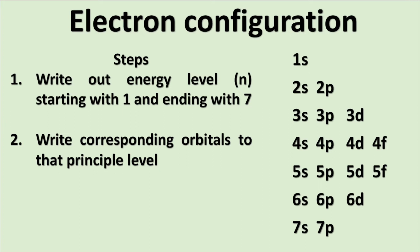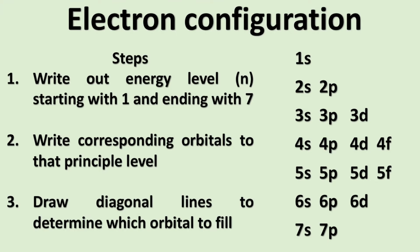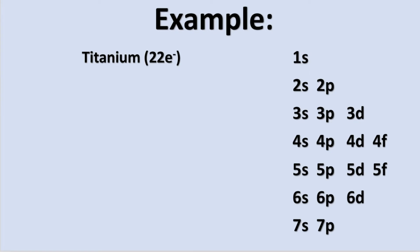So you must be wondering how this diagram is actually going to be useful. As we begin to write electron configurations, we will begin to use this diagram to help us by filling the orbitals in a diagonal fashion. What I mean by this is as we fill in the orbitals, we will draw diagonal lines to determine which orbitals to fill. Let's put this into action and take titanium, which is a transition metal, and begin to distribute its 22 electrons using this diagram.